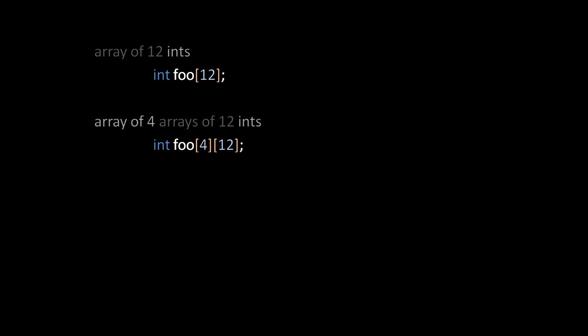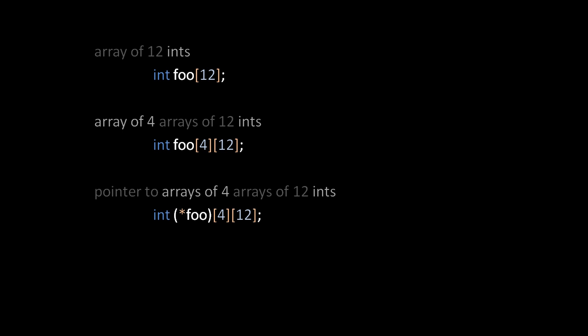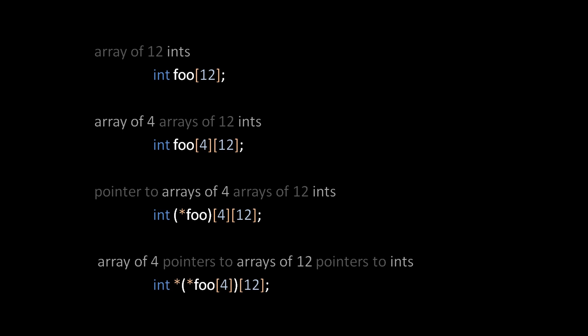In the next declaration, we've added an asterisk enclosed in parentheses around the name. Without the parentheses, the square brackets would have higher precedence, but with the parentheses the asterisk is applied first — so this is a pointer to arrays of 4 arrays of 12 ints. Lastly, we've added an asterisk outside the parentheses and moved the first square brackets inside. Because square brackets have higher precedence than asterisk inside the parens, this is an array of 4 pointers, and looking outside the parens, those pointers point to arrays of 12 pointers to ints.